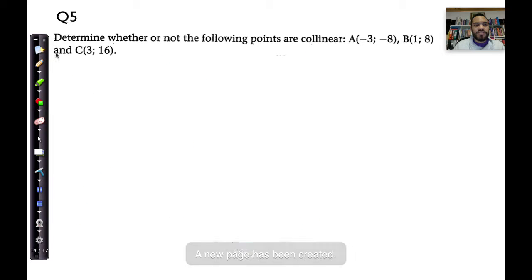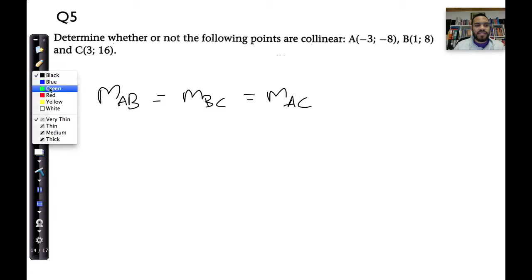So, now there's an important condition for collinear points. It says, well, if A, B, and C are collinear, then the M of AB must be equal to M of BC, which must also be equal to M of AC. So, we've got to check each of these individually. Let's get into that.